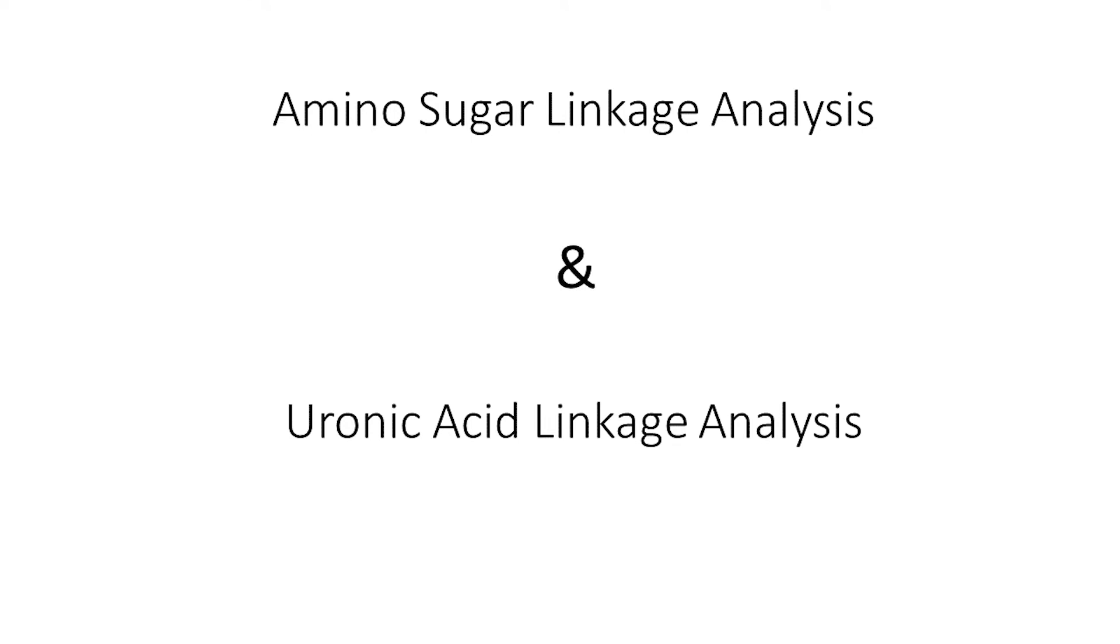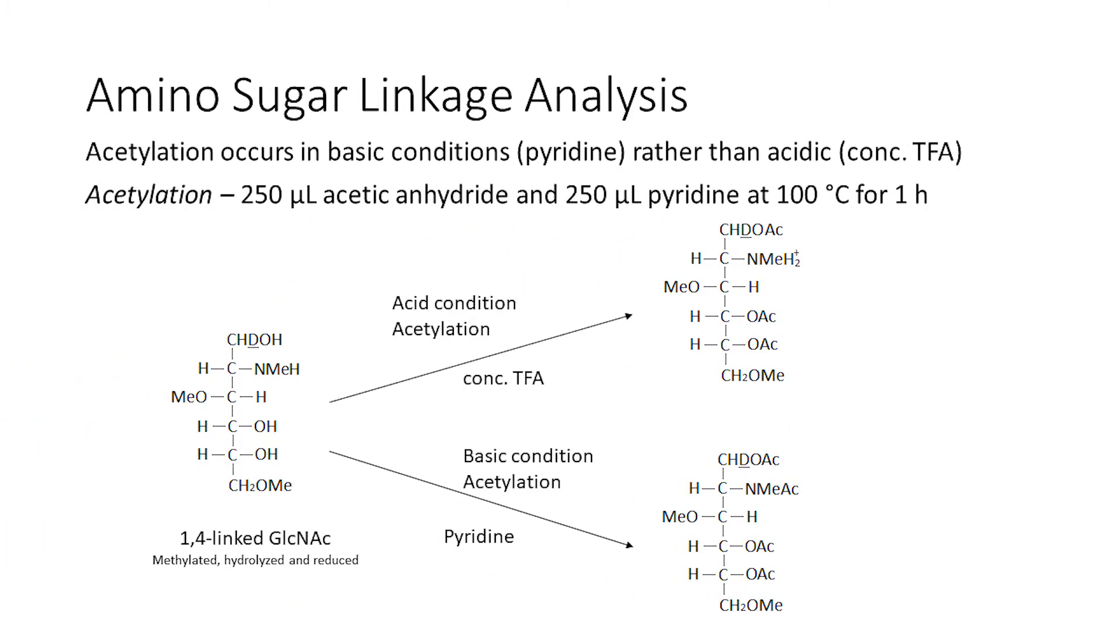Now, let's discuss some changes to the linkage procedure that are necessary to identify amino sugar linkage residues and uronic acid linkage residues. Let's begin with amino sugars. For amino sugars such as N-acetyl glucosamine and N-acetyl galactosamine, the acetylation step is changed. The typical acidic conditions do not result in a complete acetylation of the sample and instead would result in some positively charged amino groups which will be polar and unable to enter the GC column. This would result in an incomplete representation of the amino sugar linkages in the results so we must use basic conditions.